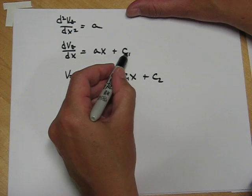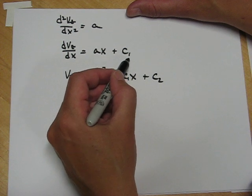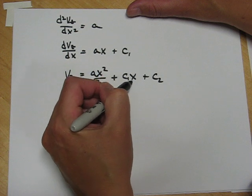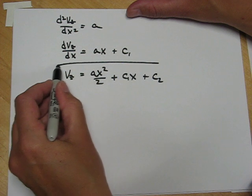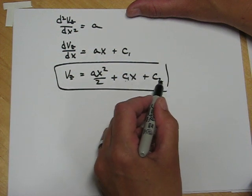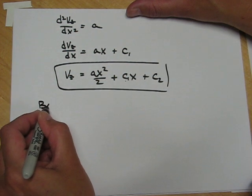You see, if we had forgotten the integration constant at this step, this term with the x wouldn't have been here at all. So there's the velocity profile. We now need to evaluate those two constants with boundary conditions.